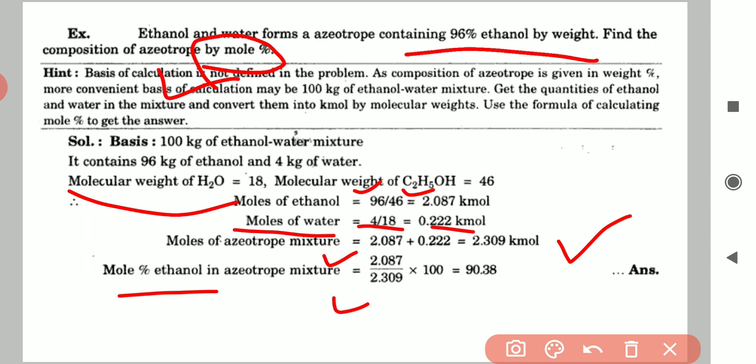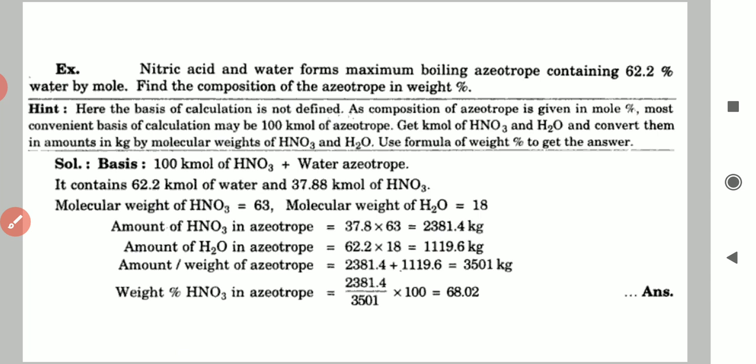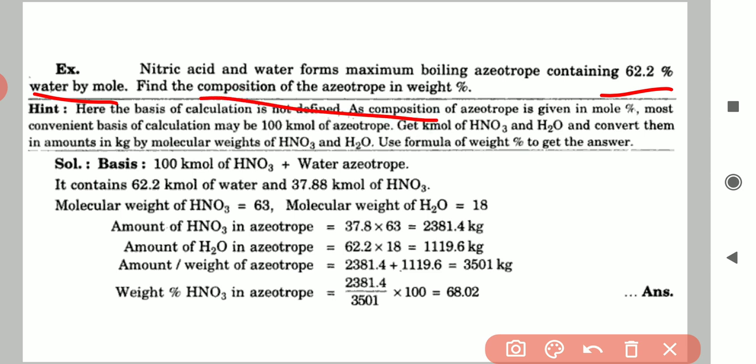The next example: nitric acid and water form a maximum boiling azeotrope containing 62.2% water by mole. We need to find the composition of the azeotrope in terms of weight percent. In the previous example, weight percent was given and mole percent was to be found; here it is the reverse — mole percent is given and we need weight percent.